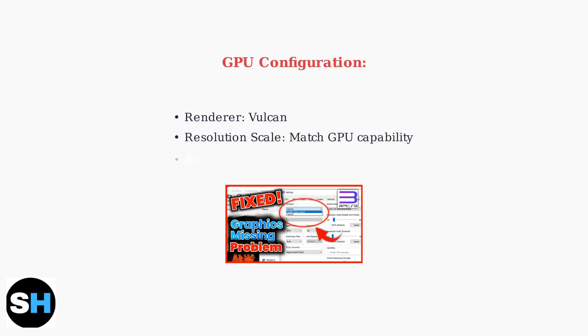For GPU settings, use the Vulkan renderer for best performance. Adjust the resolution scale based on your graphics card capabilities, and enable right color buffers and FSR sharpening for improved visual quality.